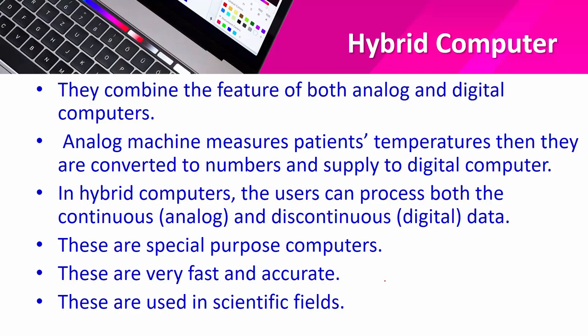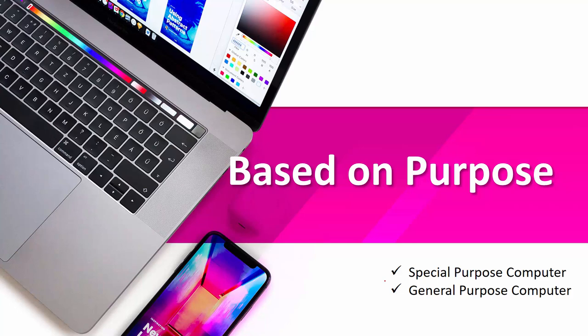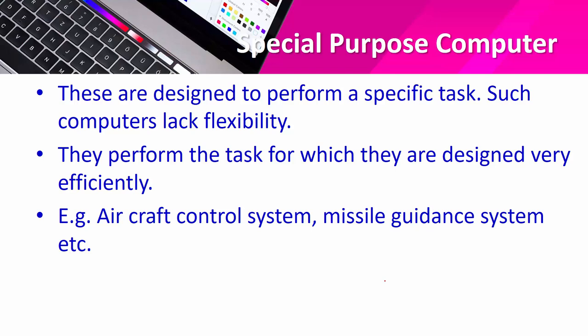Now let me explain the third and last type: computers based on purpose — special purpose and general purpose. Special purpose computers are designed to perform a specific task. Such computers lack flexibility; they perform only the task for which they are designed, but they do it very efficiently. Examples include aircraft control systems and missile guidance systems — they will not do printing or file storage.